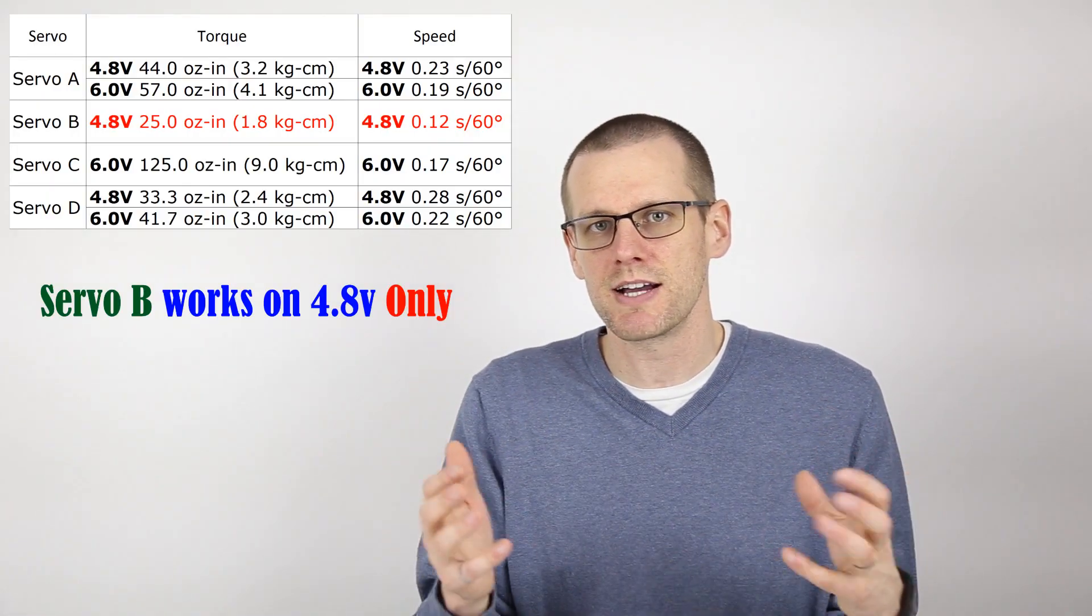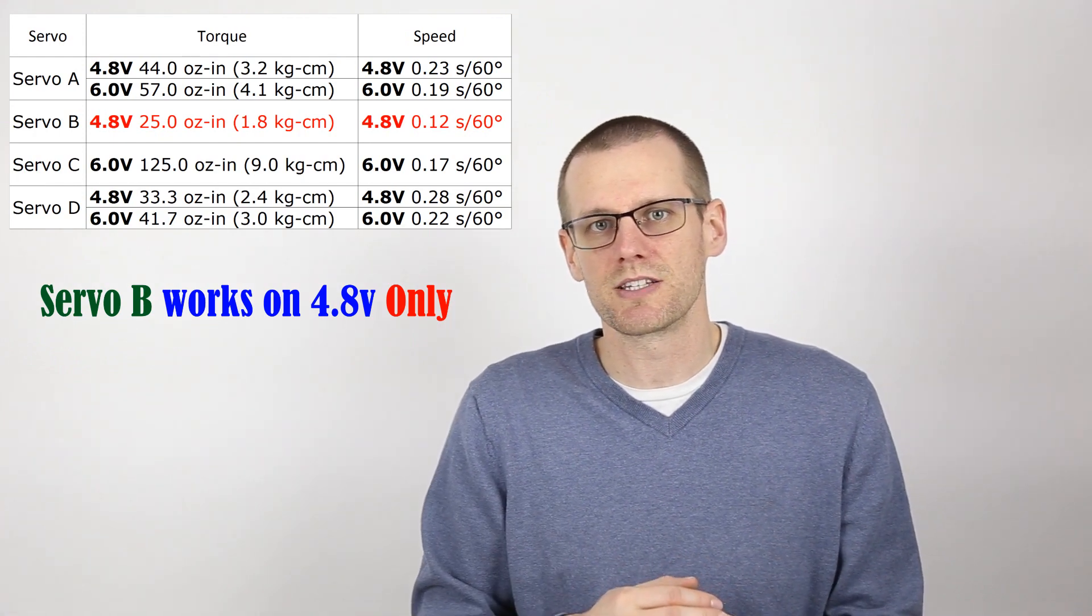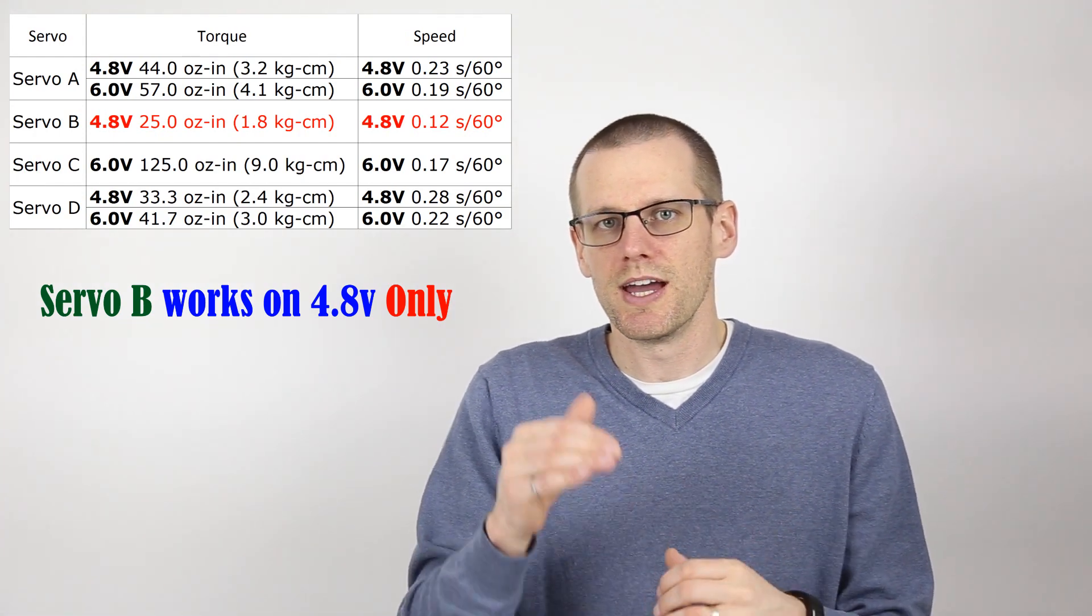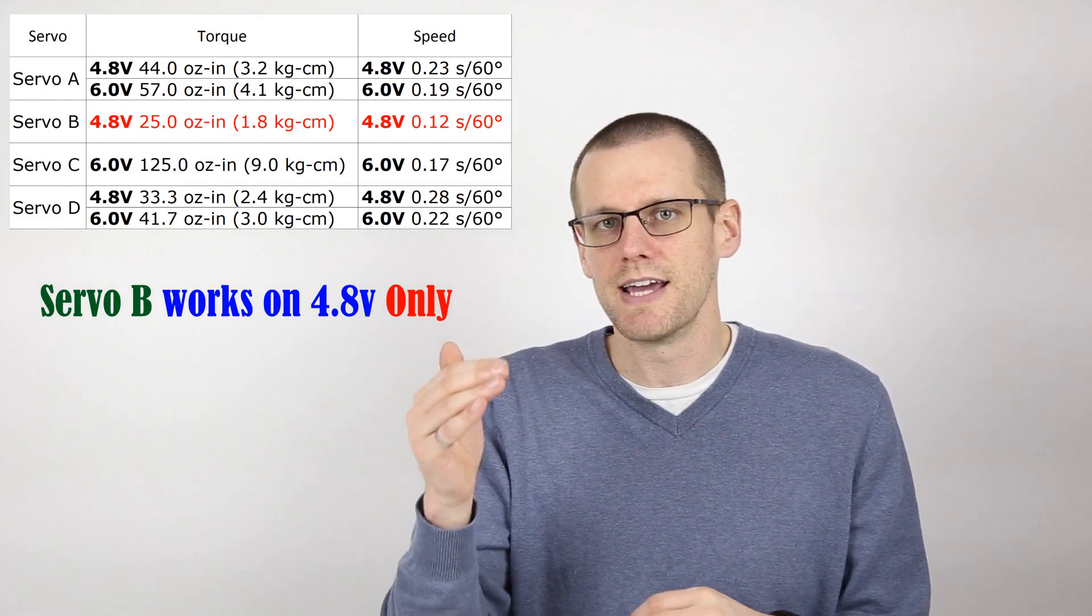Now coming back to the point that we raised earlier where some electronic speed controls allow you to adjust the BEC voltage. My recommendation is to look at that voltage on your servos and see what your servos allow as an absolute maximum. Then once you know that take a look at what your receiver allows as a maximum and then what you want to do is select the BEC voltage from your speed control at that exact maximum.